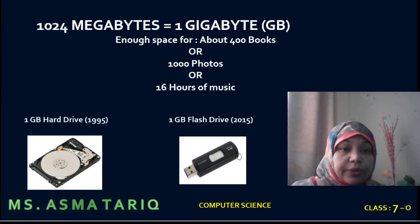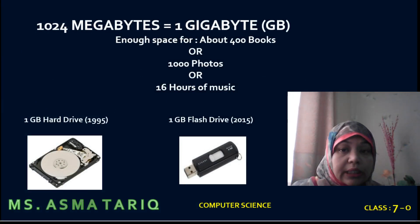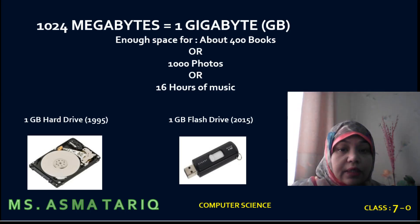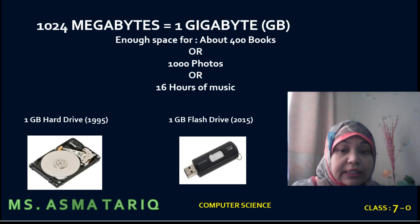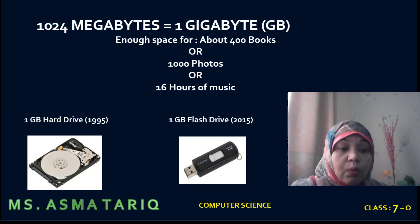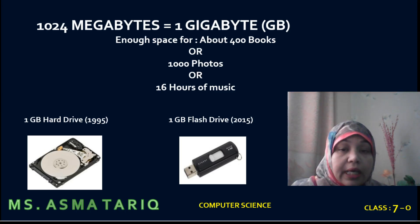Similarly, 1024 megabytes is equal to 1 gigabyte (GB). This is enough space for about four hundred books, one thousand photographs, or 16 hours of music to store. One GB hard drive was introduced in 1995 and one GB flash drive was introduced in 2015.